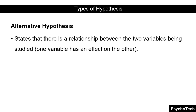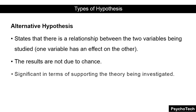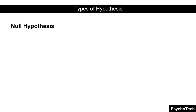The alternative hypothesis states that the independent and dependent variables being studied have a relationship, and one variable has an effect on the other variable. It also states that the results are not due to chance and that they are significant in terms of supporting the theory being investigated. Next we have the null hypothesis.